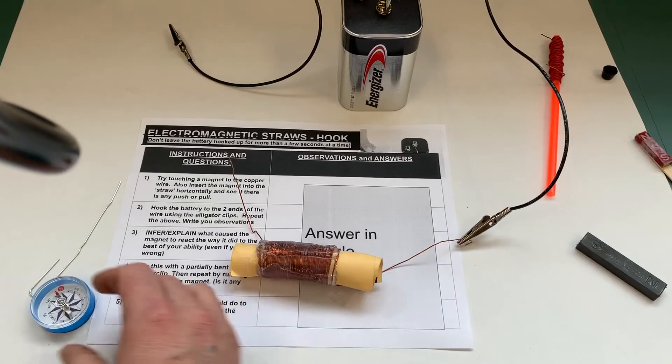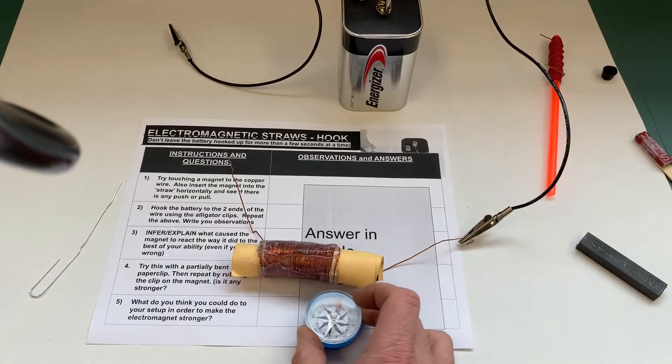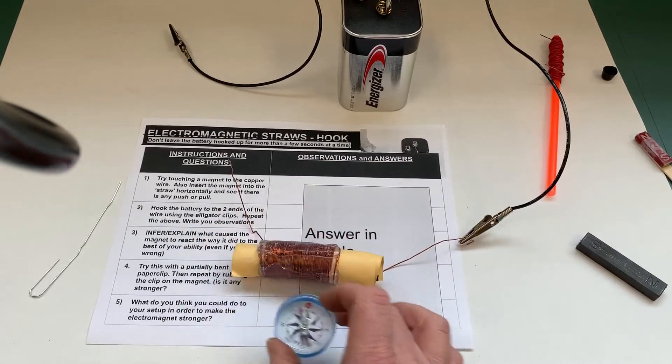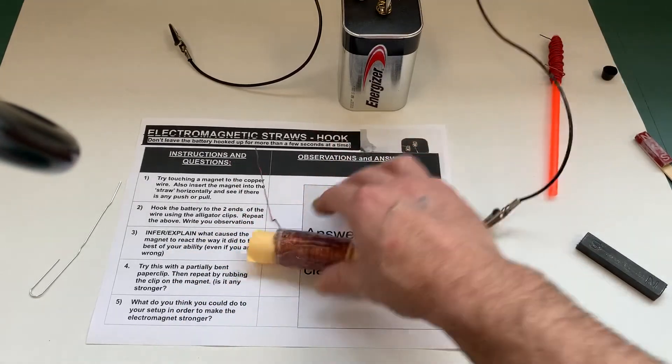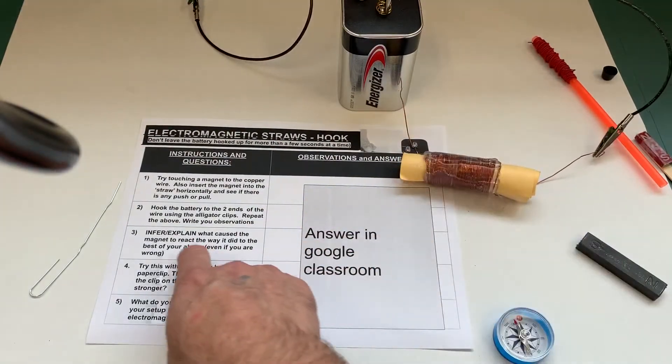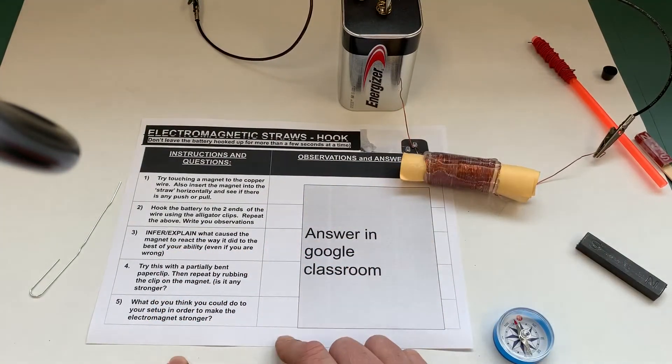And then get your magnet out of the way and then repeat this and see if there's any pull to the compass in any way. And then I'm going to have you sit back down, make sure everything's disconnected or at least one of these is disconnected, and you're going to explain why you think that is to the best of your ability.